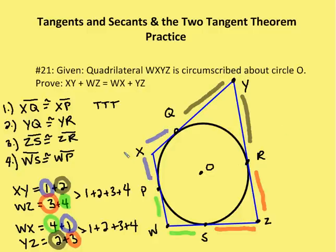What I'm going to do is identify the different segments. I'm going to use the two-tangent theorem to show the congruence of the different segments. I know that XQ here in blue is congruent to XP. I know that YQ here in black is congruent to YR. This is all by the two-tangent theorem. I know that ZS in red is congruent to ZR. I know that WS here in green is congruent to WP.